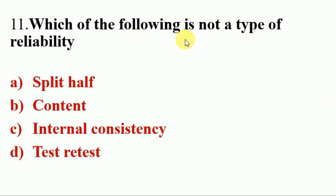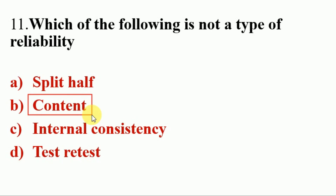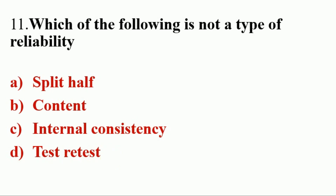Next question. Which of the following is not a type of reliability? Options A. Split half, B. Content, C. Internal consistency, D. Test-retest. Answer is B. Content. Content is a type of validity — that is, content validity. The rest of the options: Split half is a type of reliability; Internal consistency is a characteristic of reliability; Test-retest method is also used to assess reliability, specifically stability.